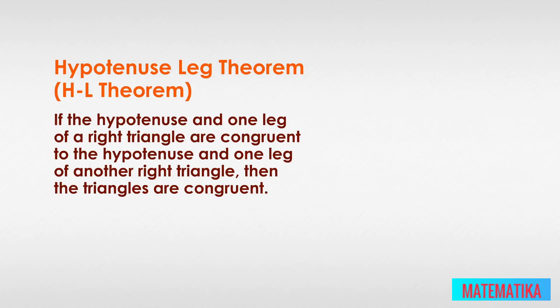If we could squeeze that right angle between the hypotenuse and another leg we would be in great shape, but of course you can't do that because the hypotenuse of a right triangle is always opposite the right angle. So what do we do? We have to be very mathematically clever and enlist the aid of a different type of triangle.